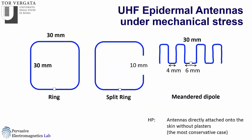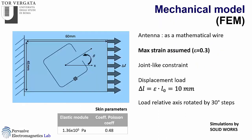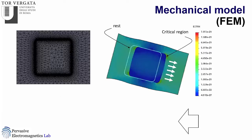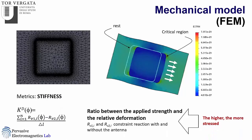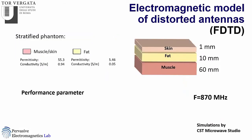We can now apply this stress to analyze typical antennas: a ring, a split ring, and a meandered dipole as reference. First, a mechanical finite element model with the force applied at different angles up to the maximum strain. This shows an example of a stressed configuration — the light shape is at rest, the deformed one is stressed, with color indicating the most critical regions. The stiffness matrix gives the ratio between applied force and relative deformation; higher values indicate more stressed configurations.